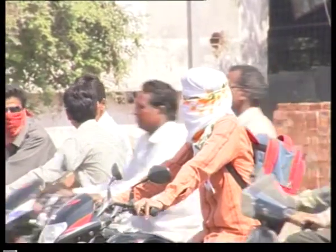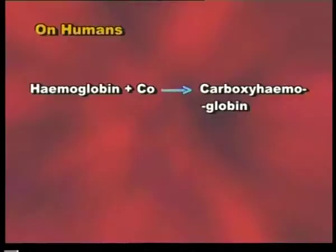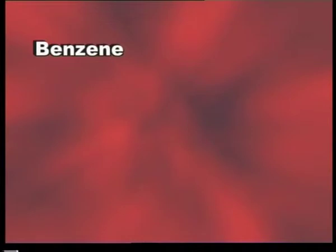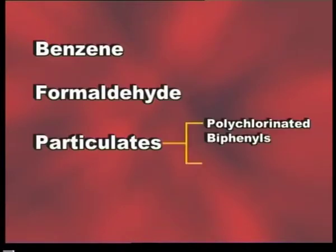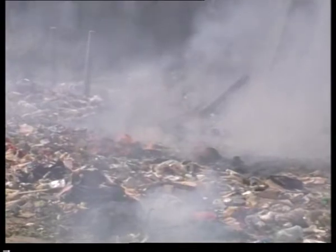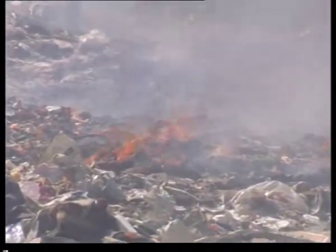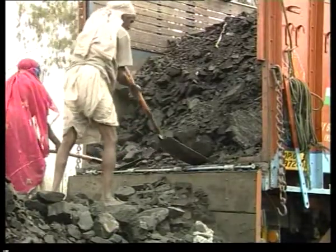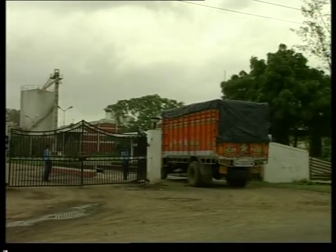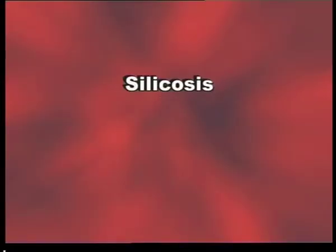High amounts of carbon monoxide, when reaching the lungs, combine with hemoglobin to form carboxyhemoglobin. Hemoglobin is therefore unable to transport oxygen to various parts of the body, causing suffocation. Many other air pollutants like benzene, formaldehyde and particulates like polychlorinated biphenyls and dioxins, generated by the burning of polyethylene, can cause mutations, reproductive problems and even cancer. Particulate pollutants from slate pencil industries and asbestos factories can cause respiratory diseases like silicosis and asbestosis.